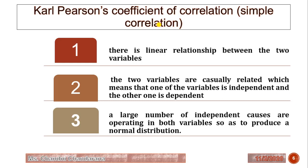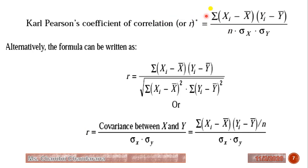Carl Pearson's coefficient of correlation, also called simple correlation, has the following assumptions: first, there is a linear relationship between the two variables; second, the two variables are causally related, meaning one is independent and the other is dependent; third, a large number of independent causes operate in both variables so as to produce a normal distribution. The formula can be written in multiple equivalent forms.